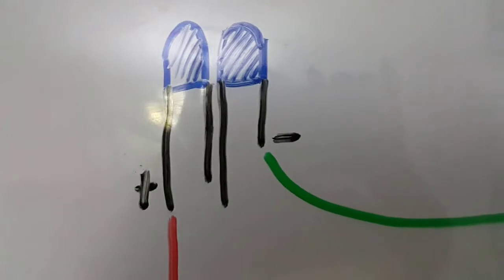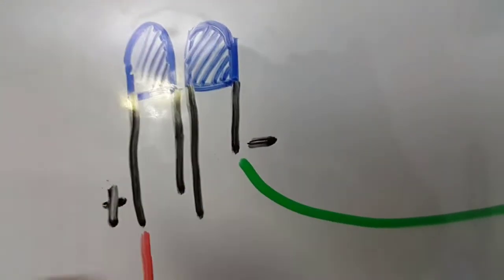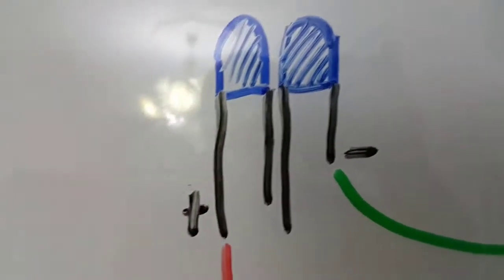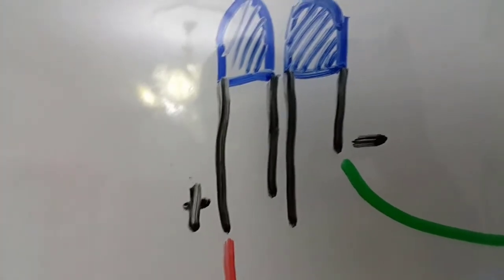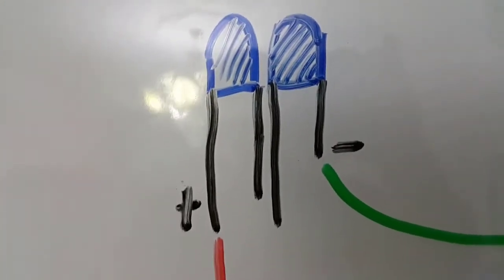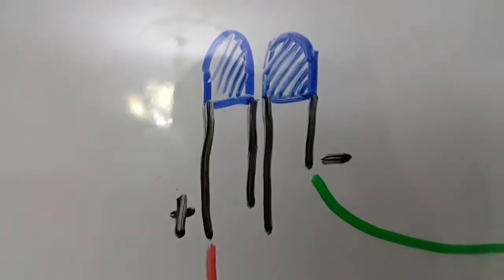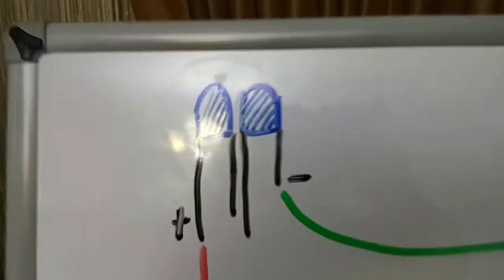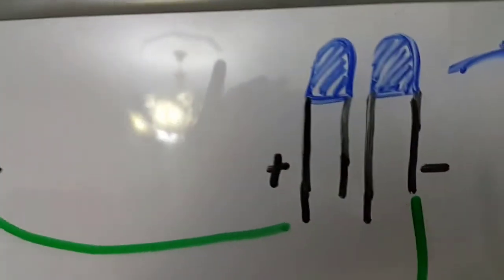The LEDs actually have two legs. The long leg is the plus and the short leg is minus port. So you will use two on left and two on right.